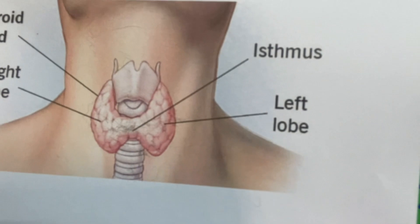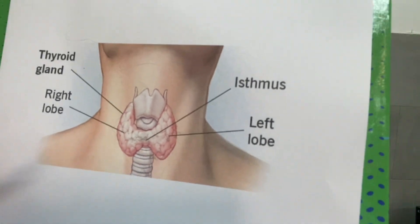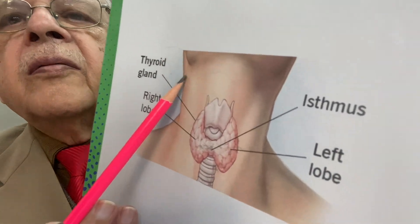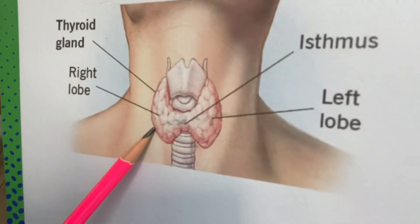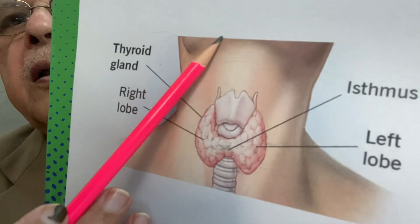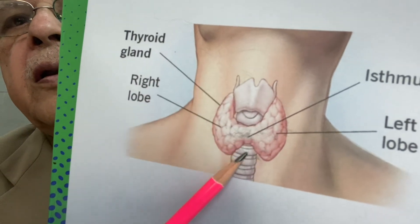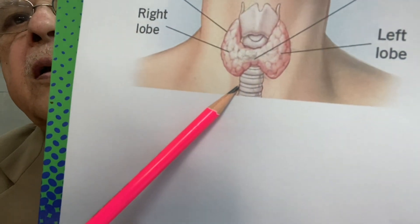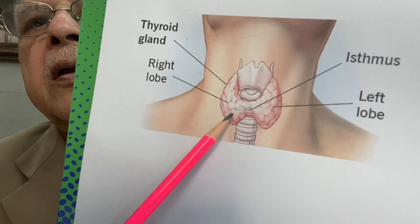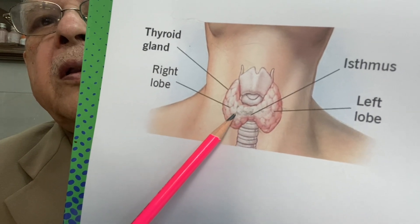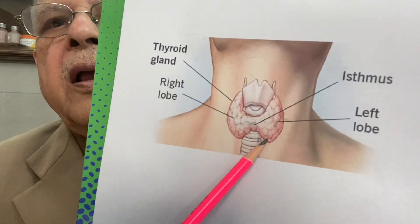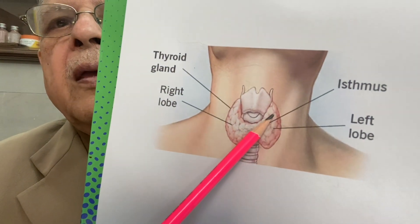Look at this diagram. This is the neck of the patient, right from the lower jaw to the sternum. In the center of the neck you find this ring structure — this is the windpipe, and covering the windpipe in this middle portion is what we call the thyroid gland.